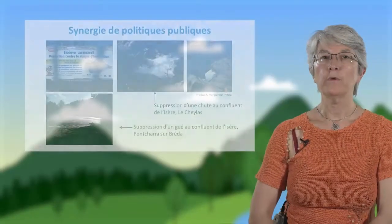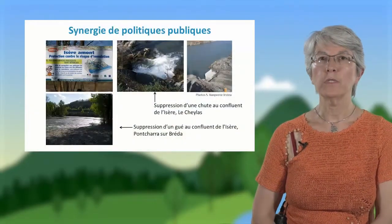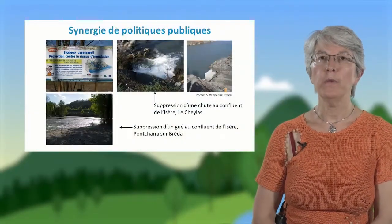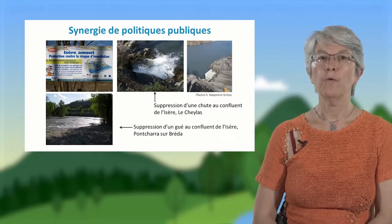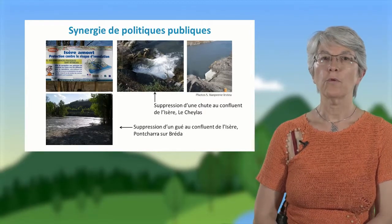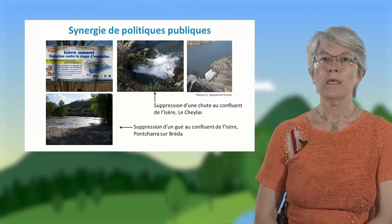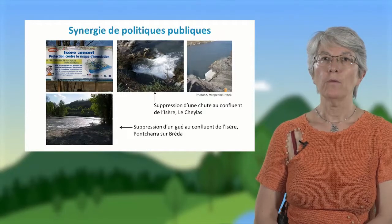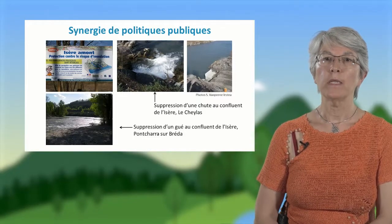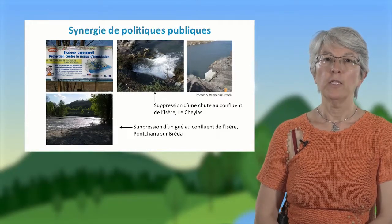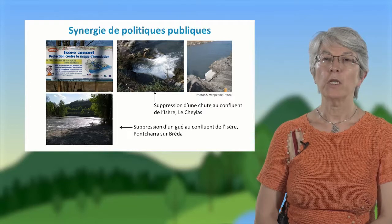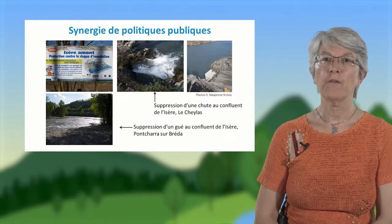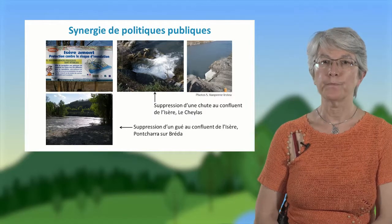La trame verte et bleue a aussi été l'occasion de synergies de politique publique, comme c'est le cas en Isère pour la protection contre le risque d'inondation, qui a permis de supprimer des seuils et des guets, et des chutes d'eau qui empêchaient la remontée de poissons de l'Isère vers les affluents.